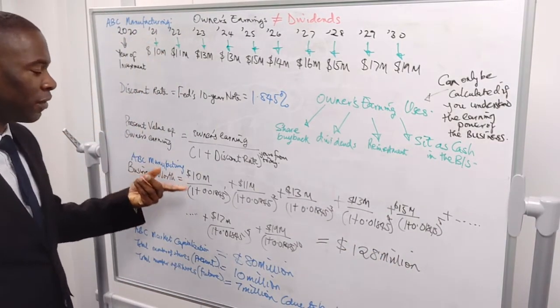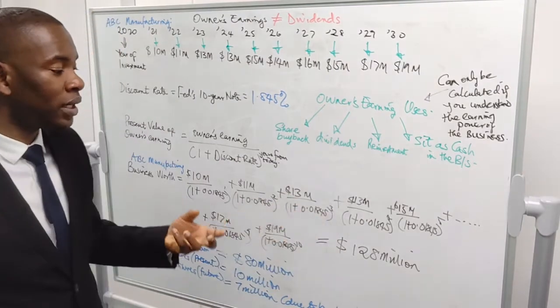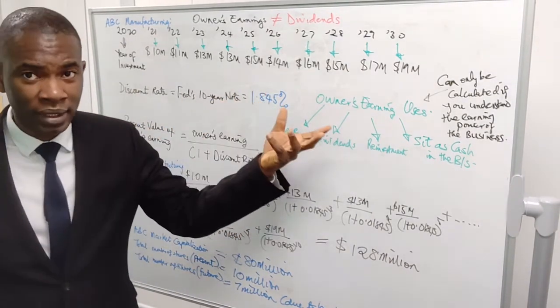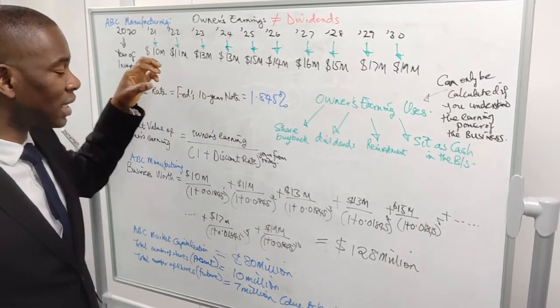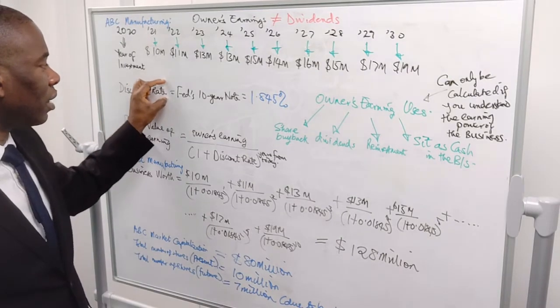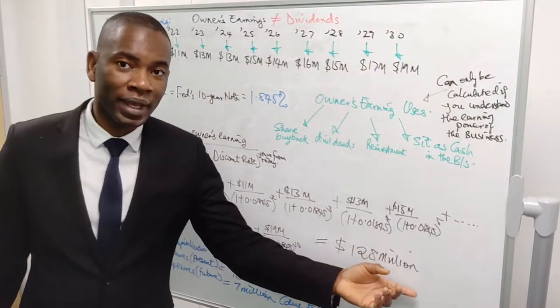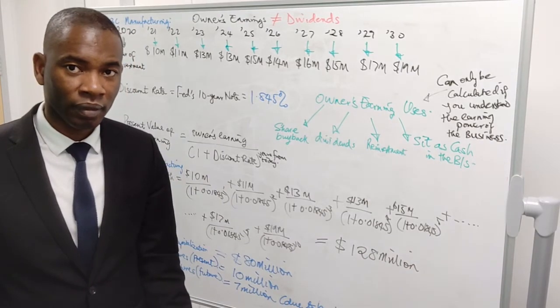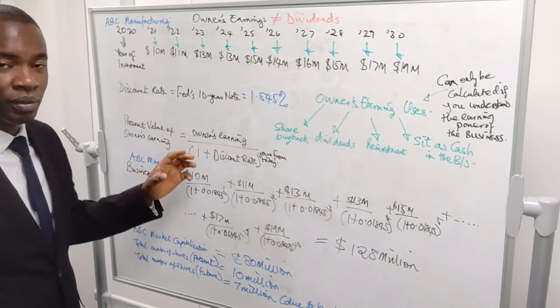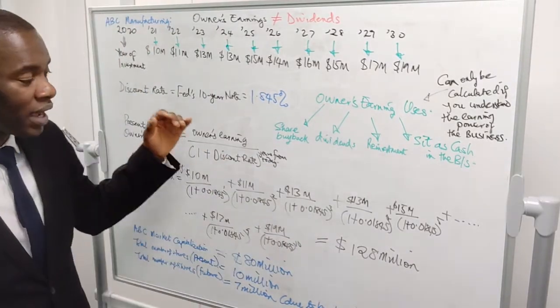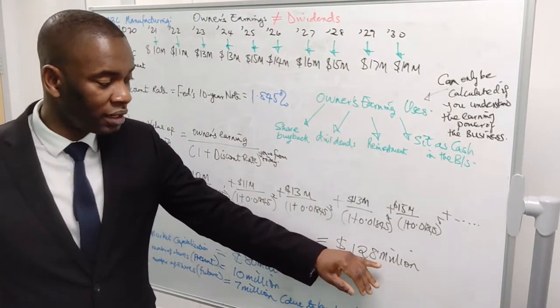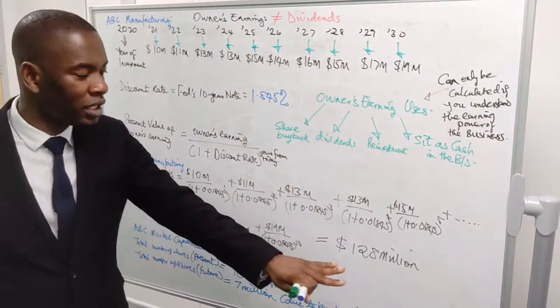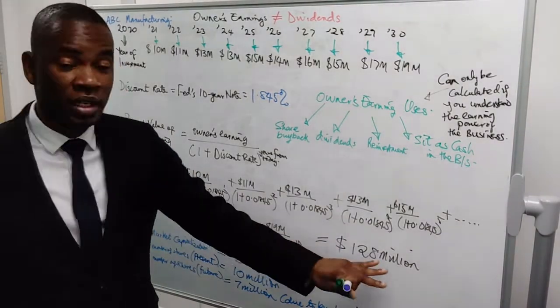If you add up all this, you have 128 million as the business ABC manufacturing worth. The meaning is that if you were to buy all of ABC right now, what you will get in the next 10 years, if you discount it by the risk-free rate, what you are going to get in the next 10 years is going to be 128 million discount value. That is what you are going to get. Whatever capital you lay out now, 128 million is what you are going to get. Now, let's look at, we have gotten this market capitalization and we have gotten this ABC business worth.